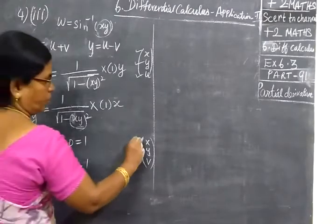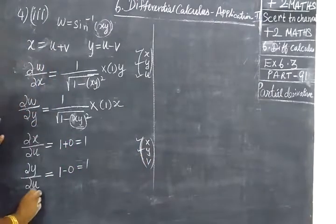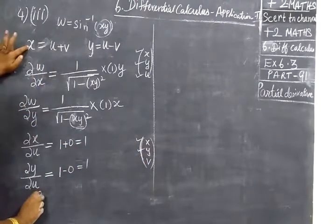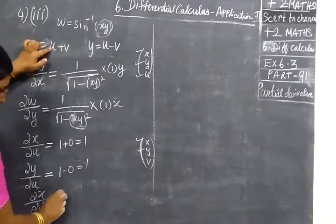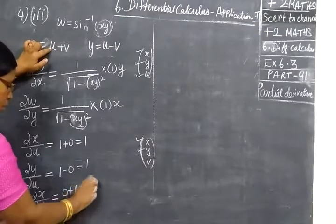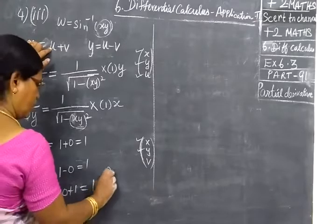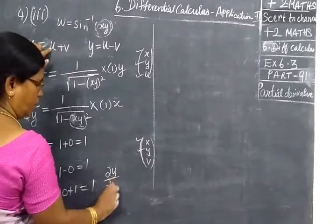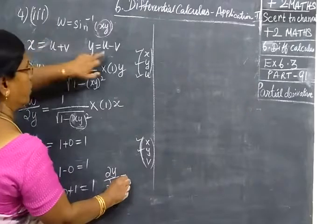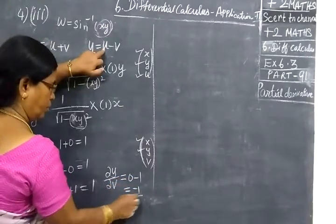Next is this — this is V. So do-x by do-v equal to, if v is equal to u is 0, so 0 plus 1 equal to 1. Then next, do-y by do-v equal to, this is 0, this is minus 1. So minus 1 is equal to 1.